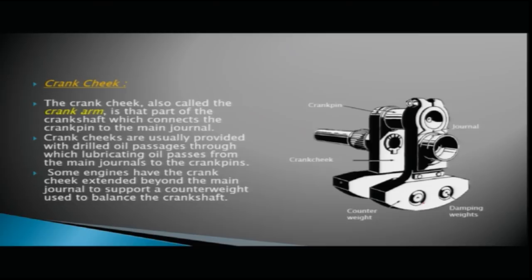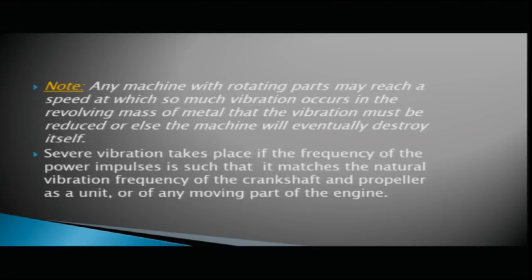Any machine with rotating parts may reach a speed at which vibration occurs in the revolving mass of metal that the vibration must be reduced or else the machine will eventually destroy itself. Severe vibration takes place if the frequency of power impulses matches the natural vibration frequency of the crankshaft and propeller as a unit.